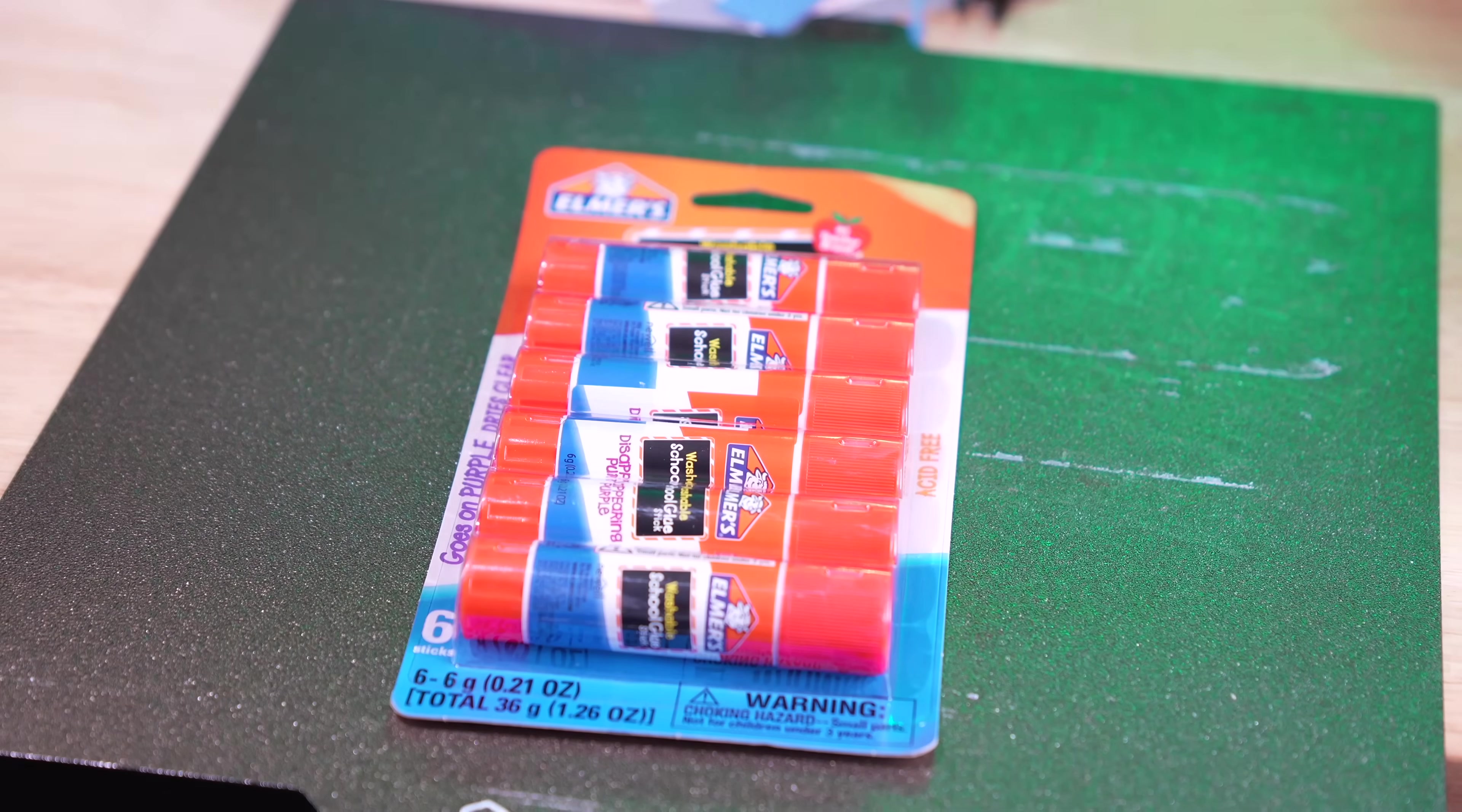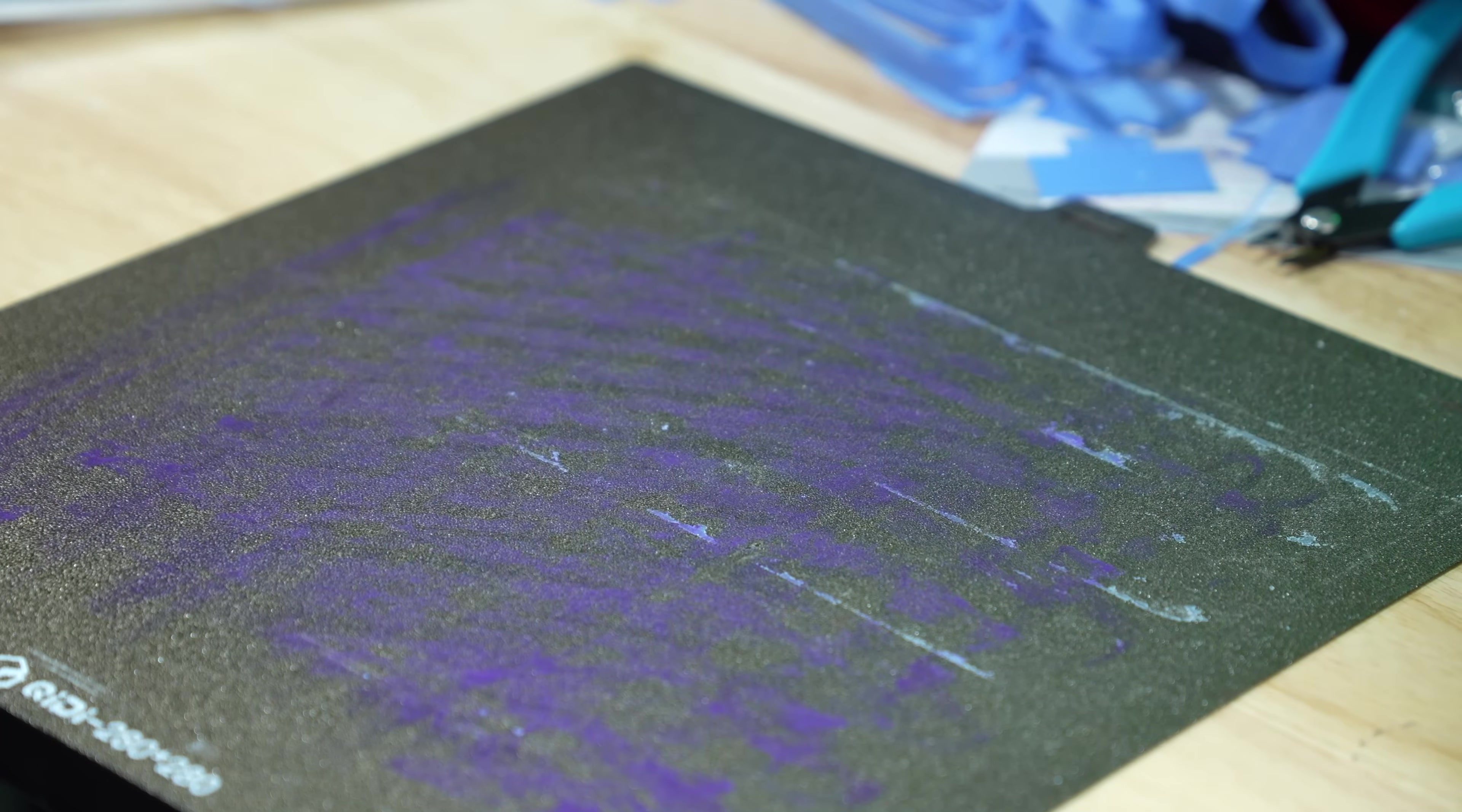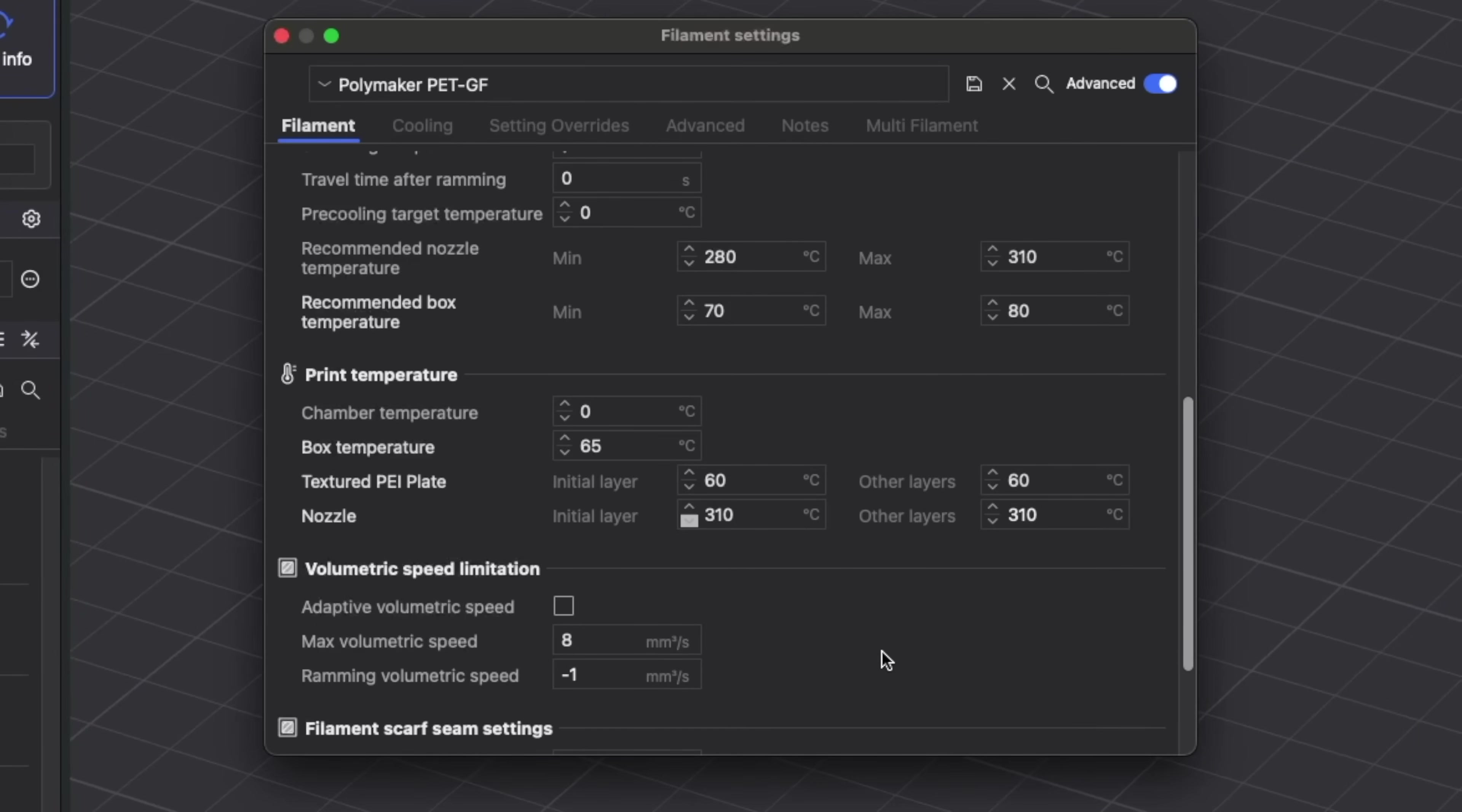So for the rest of my prints, and what I would recommend to anybody printing with this material, I applied glue stick to act as a release agent, I raised my z offset ever so slightly, and I changed the build plate temperature from 80 celsius to 60 celsius, which gave me still fantastic adhesion, but the parts did not do that again.